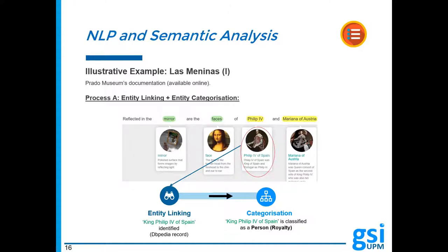Taking up the mentioned example, the entity Philip IV will be classified as a person, concretely royalty. Therefore, potential questions that spring to mind could be: when did Philip IV reign, or who is the successor of Philip IV?